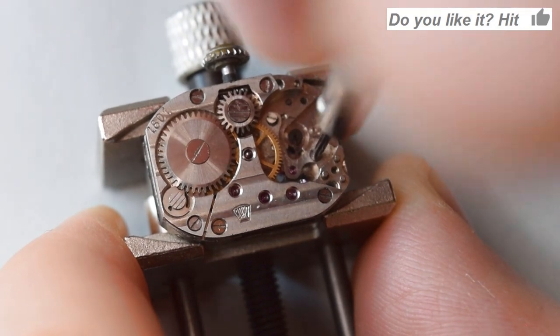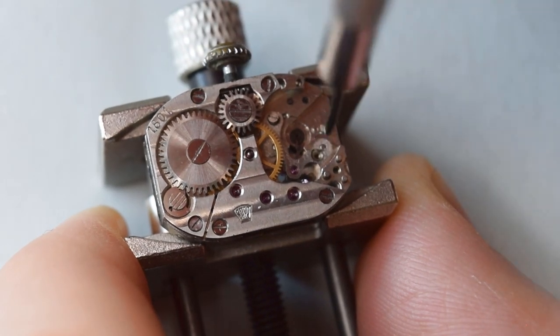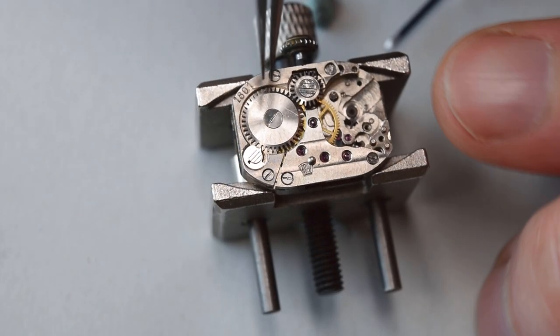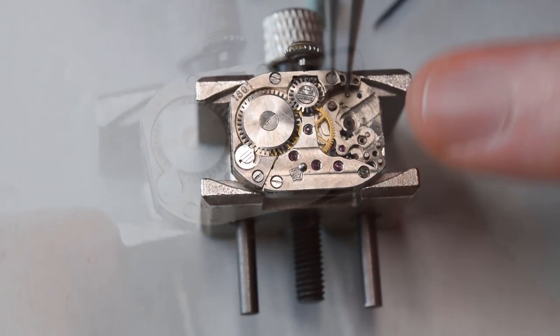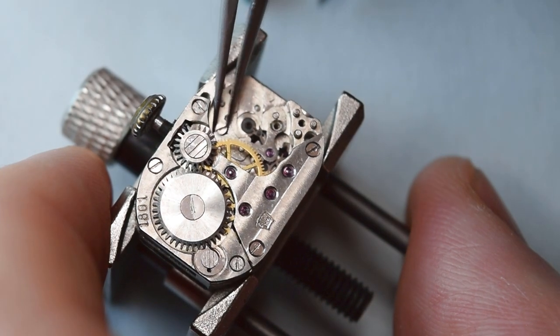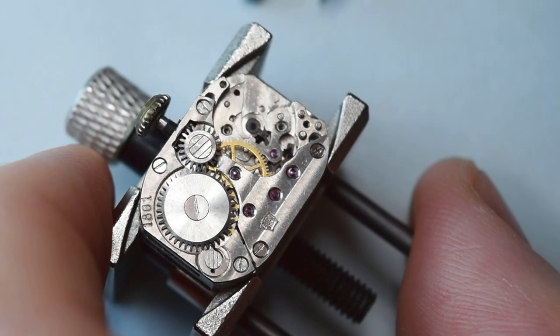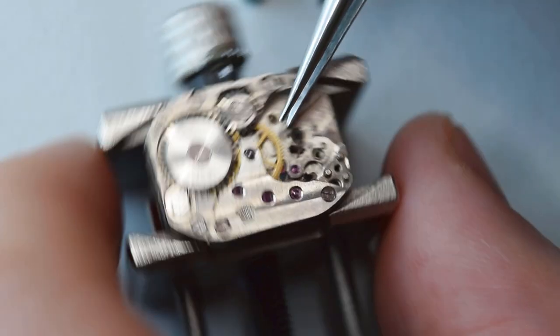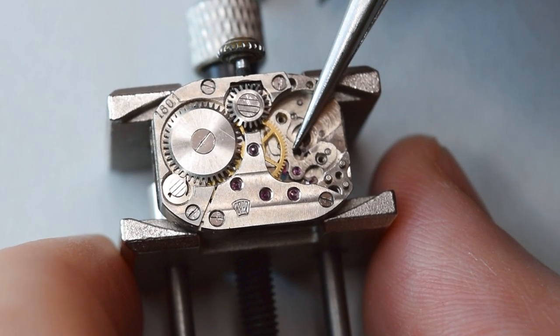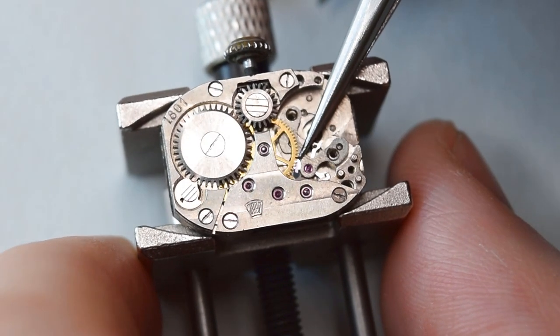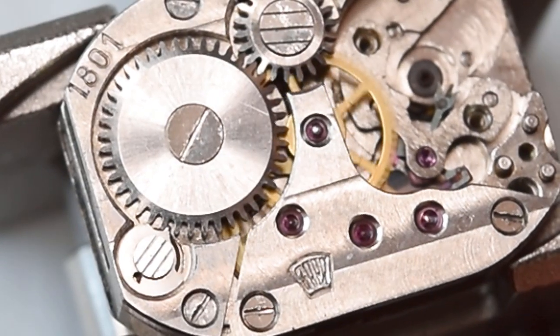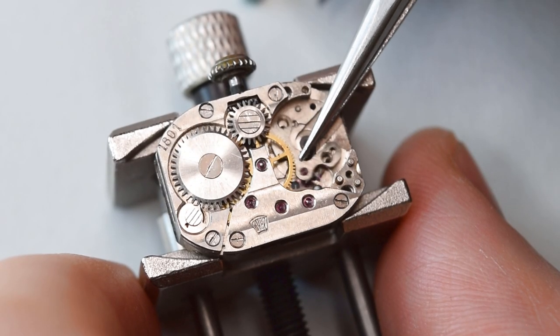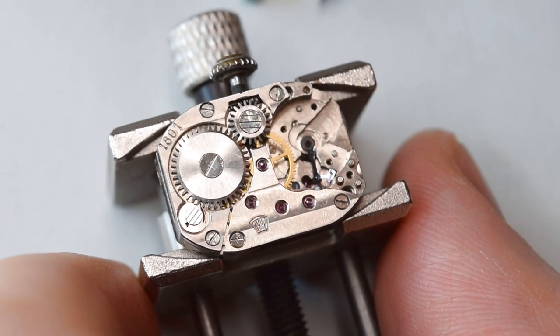Now what's left is the pallet cock and the pallet fork. This screw was holding a bit stronger. Let's take a look and see how small the movement is compared with my finger. Now we have to take out the pallet cock, and there's still a little bit of tension on the mainspring.